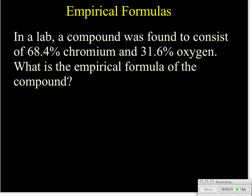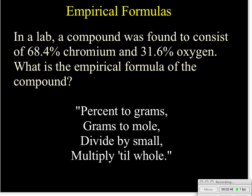So here is a typical question we might encounter. In a lab, a compound was found to consist of 68.4% chromium and 31.6% oxygen. What is the empirical formula of this compound? Well, there's a little poem that I came across. It's not a great poem, but it kind of helps us to remember what we're supposed to do. The poem goes: percent to grams, grams to mole, divide by small, multiply till whole. Again, not the greatest poem in the world, but it will help us with this. Let's break this down.